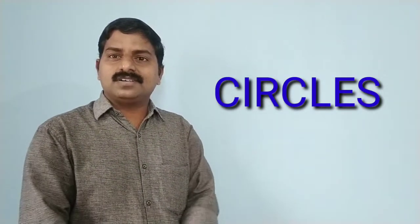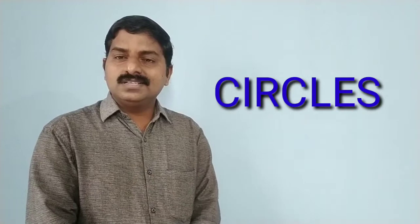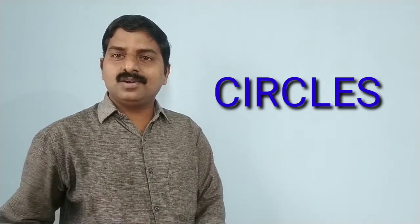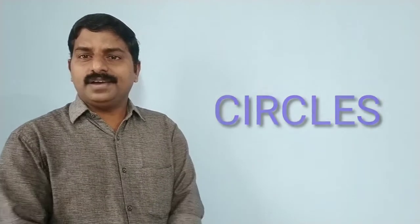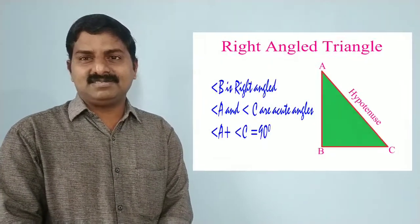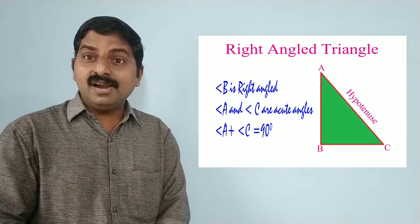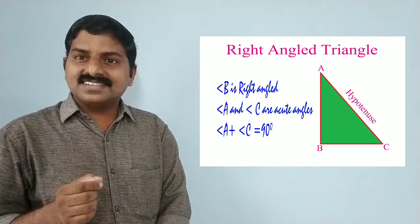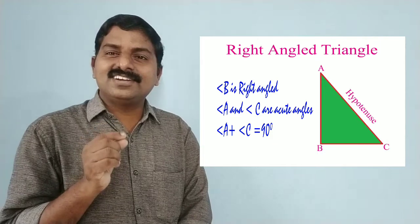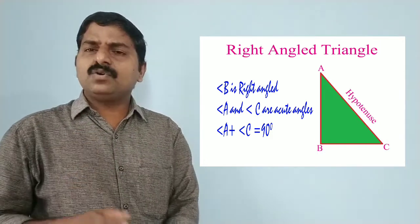Before starting our chapter, we have to recall some points that we studied in lower classes. What do you mean by a right-angled triangle? We know if the measure of one angle is 90 degrees, then that triangle is called a right-angled triangle. If in a triangle the measure of one angle is 90 degrees, then it is called a right-angled triangle — that we have already studied.